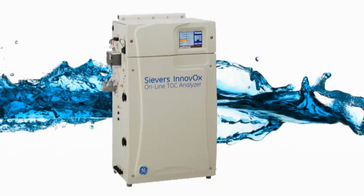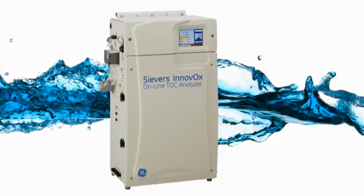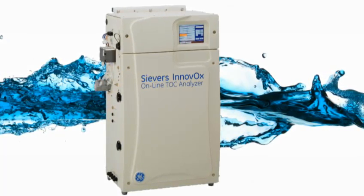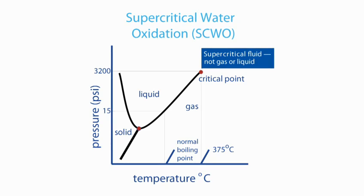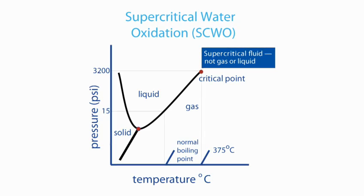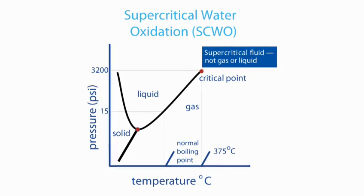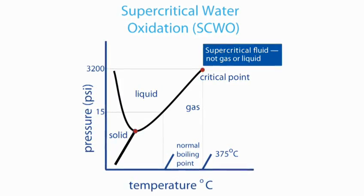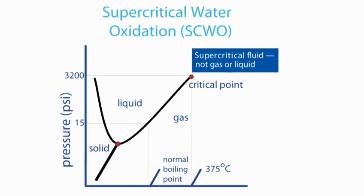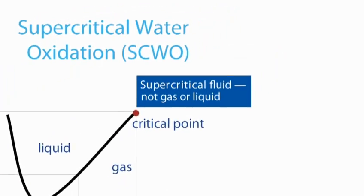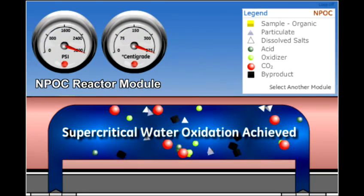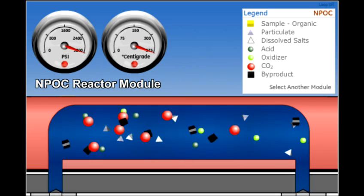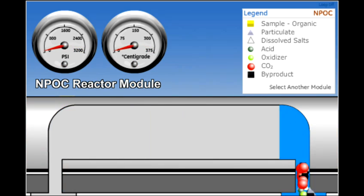GE Analytical Instruments designed the Sievers Innovox online TOC analyzer. The Innovox uses an innovative technique called Supercritical Water Oxidation, or SCWO. By raising the temperature and pressure, the Innovox converts aqueous samples to a supercritical water phase, letting it handle a wide variety of sample matrices. After each analysis, the Innovox removes troublesome particulate residues and oxidation byproducts from the sample flow path.